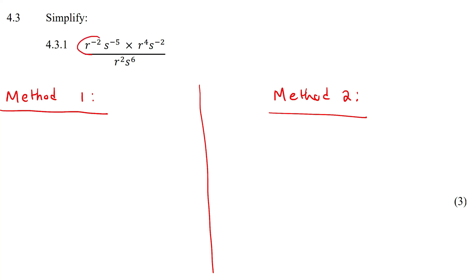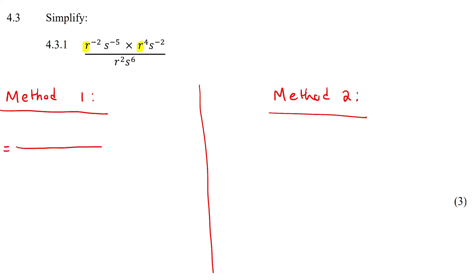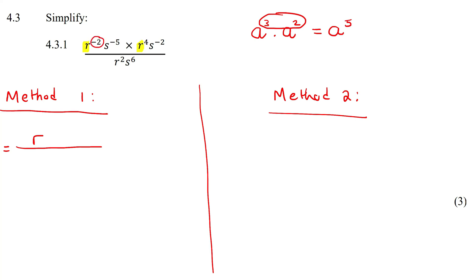With method one, I'm just going to look at the top first. I can see we've got an r over there and an r over there — I'm going to put those together. Now, what do you do with the numbers? If you have a^3 multiplied by a^2, you add the exponents.